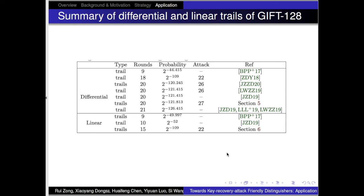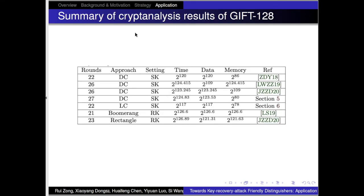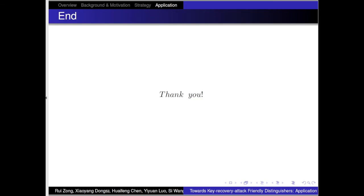We give a summary of differential and linear trails of GIFT-128 by the time this paper was submitted. Our differential trail is not the longest, but we give the longest attack on GIFT-128. For linear trails, our distinguisher is the longest. We give the best differential cryptanalysis and linear cryptanalysis results of GIFT-128. Thank you.